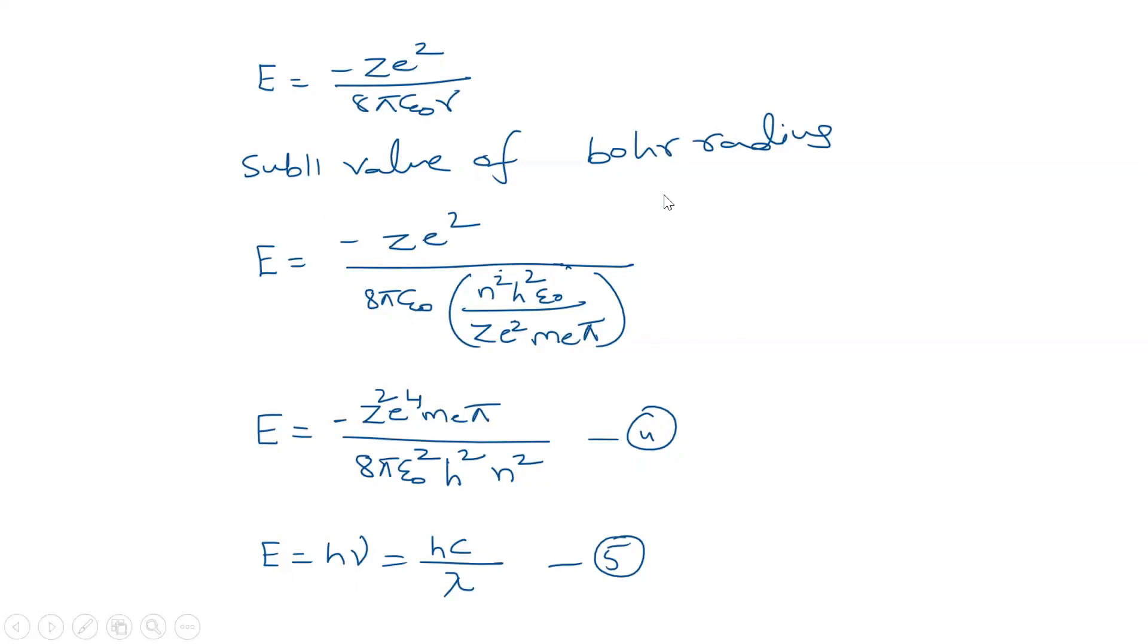When we substitute this in energy and calculate we get minus Ze squared by 8 pi epsilon r. Now we have to substitute the value of Bohr radius here. Please check in the description to know how to see the derivation of Bohr radius.